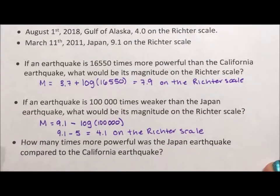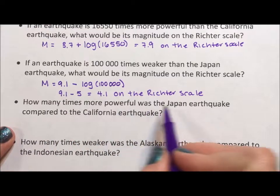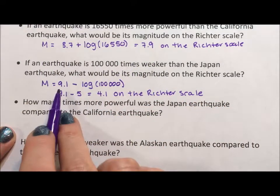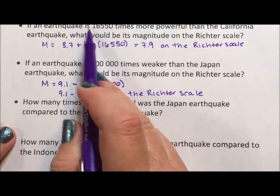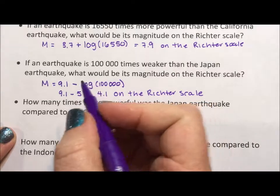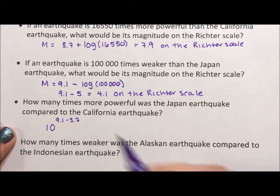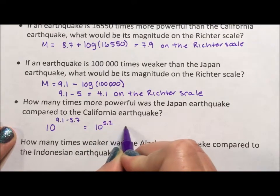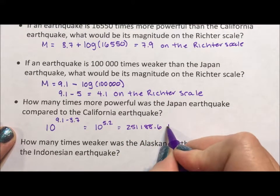Now let's talk about power in general. How many times more powerful was the Japan earthquake compared to the California earthquake? We have the numbers here: California was 3.7, Japan was 9.1. The strength is 10 to some power, so to figure out the comparative strength we find the difference — 9.1 minus 3.7 — and make those exponents of 10. So 10 to the 9.1 minus 3.7 becomes 10 to the 5.4, which is 251,188.6 times stronger.